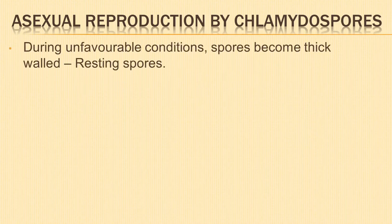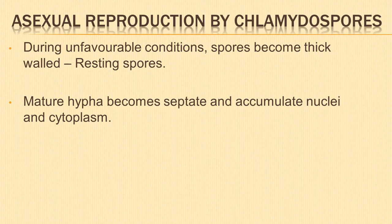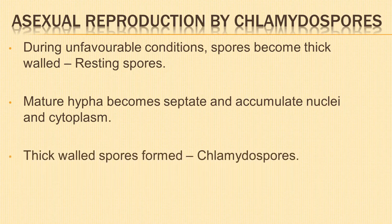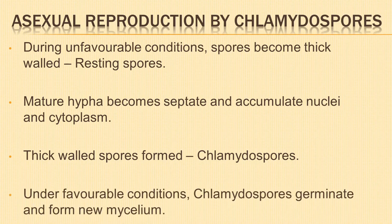Next is asexual reproduction by chlamydospores. During unfavourable conditions, the spores inside the vegetative cell develop a hard wall around themselves. These thick-walled spores are known as resting spores. The mature hypha becomes septate and accumulates nuclei and cytoplasm, and a thick wall is formed around it, changing it into the chlamydospore. With the return of favourable conditions, the chlamydospore germinates and gives rise to new mycelium.